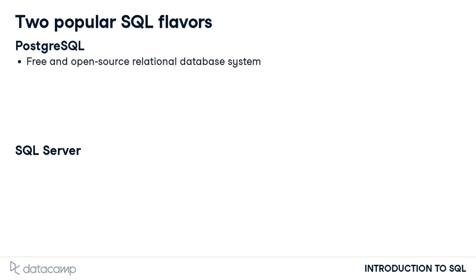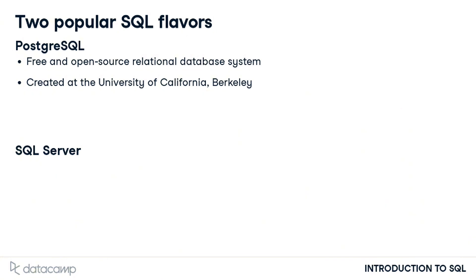PostgreSQL is a free and open-source relational database system, which was originally created at the University of California, Berkeley, and was sponsored by America's famous Defense Advanced Research Projects Agency, or DARPA. DARPA also sponsored research leading to creating the internet, the computer mouse, and GPS.